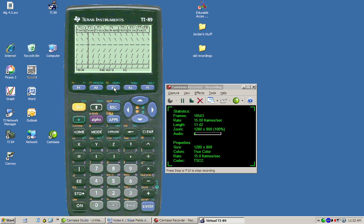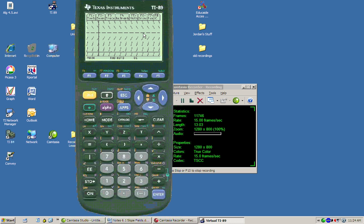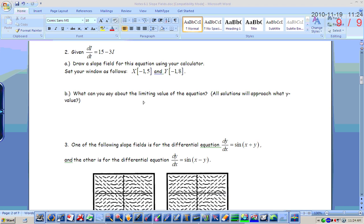Yeah, it's kind of cool watching it graph. Okay, part B is what can you say about the limiting value of the equation? Or all solutions will approach what y value? And by all solutions, I mean if you were to draw in your slope field, no matter where you start your slope field, what are all of the solutions? What y value will all of the curves approach? Is it 5? 1, 2, 3, 4, 5. Yes. Okay, so y equals 5.